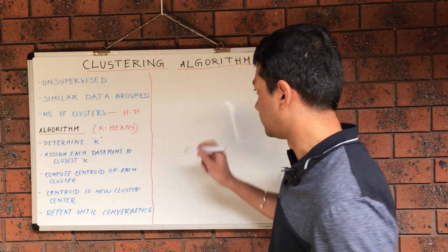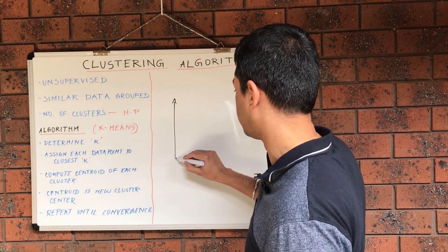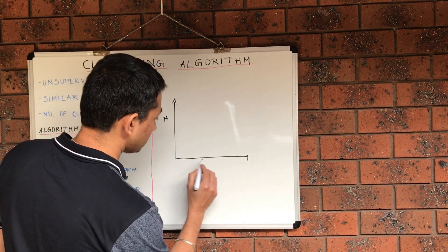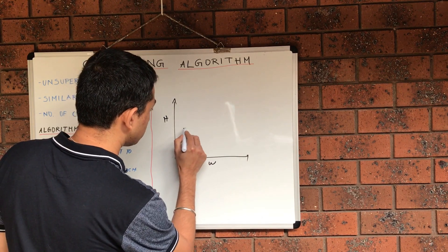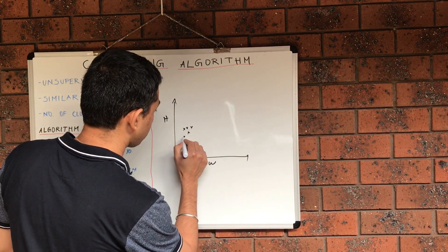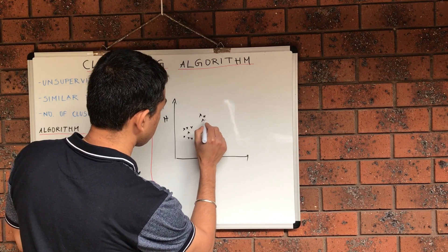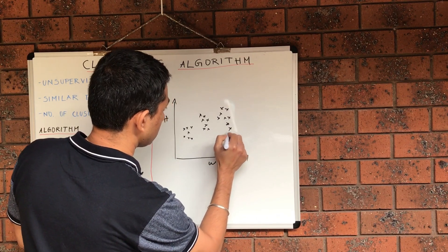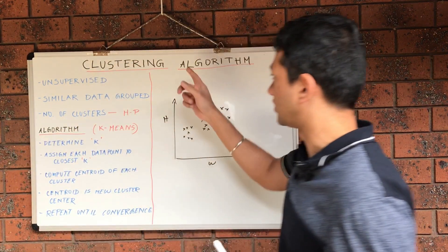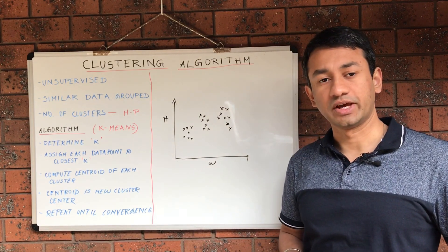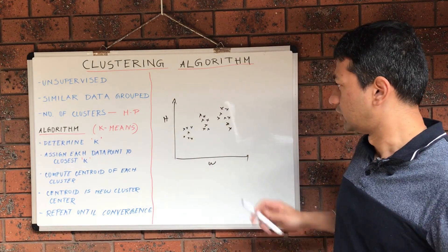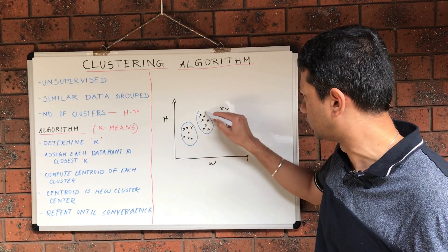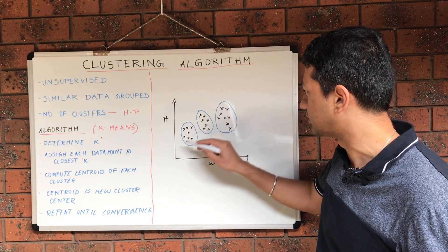Let's take an example. Let's say we have the height and weight of a number of students, and we have a number of students whose data are distributed across this space. What the clustering algorithm helps us with is grouping all the similar data together, and identifying the various clusters present in the data.